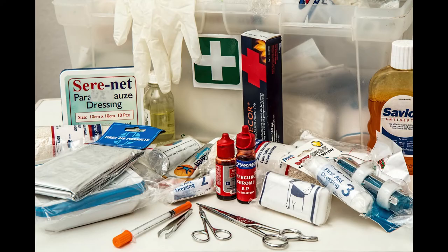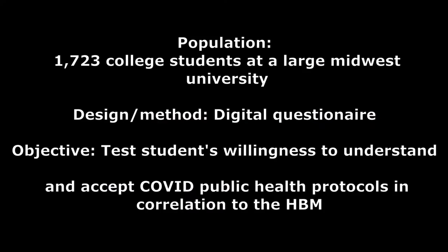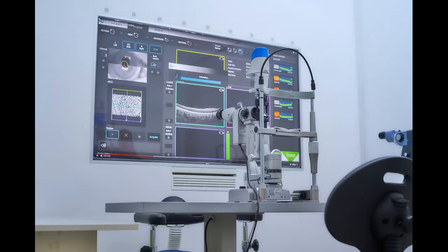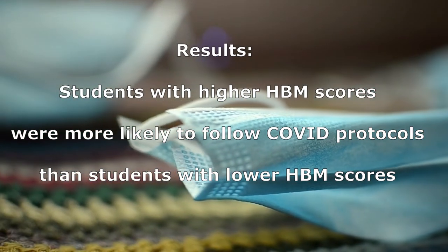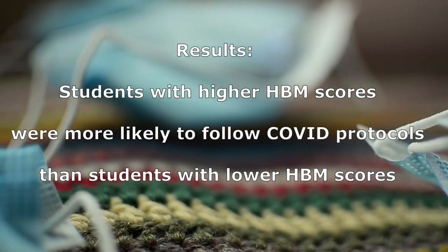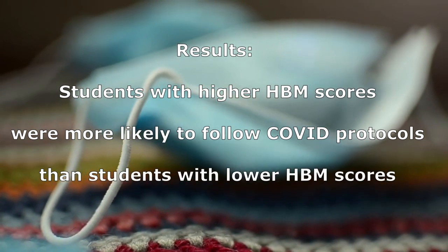In this study, also a collaboration between two people from different countries — the United States and Saudi Arabia — students from a large midwestern university were examined using an online questionnaire sent to a random sample of 1,723 students. For a large university, I would assume they would have sent it to more students, but we can take that into account when looking at the results. The questionnaire was sent between May and July of 2020. The study found that the health belief model and perceived threat are significantly associated with COVID-19 preventative measures. College students with higher HBM scores were more likely to adhere to COVID-19 preventative measures than those with lower scores. College students also reported high cues to action and low perceived barriers to most of the COVID-19 preventative measures.